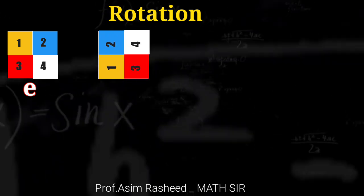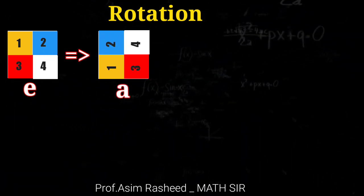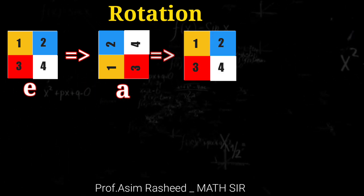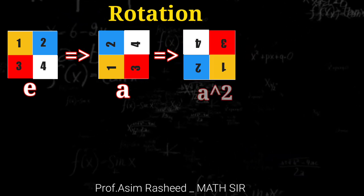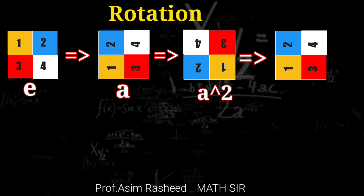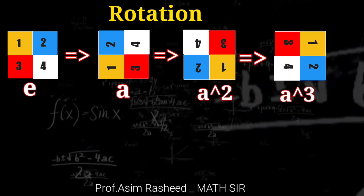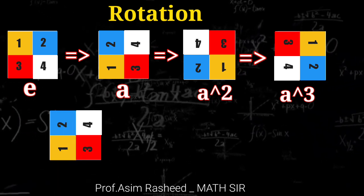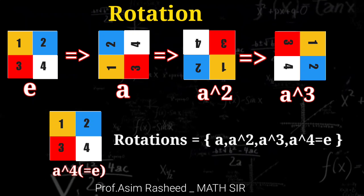90-degree rotation anticlockwise is equal to A. 180-degree rotation anticlockwise is equal to A². 270-degree rotation anticlockwise is equal to A³. 360-degree rotation anticlockwise is equal to A⁴, which is again equal to E.